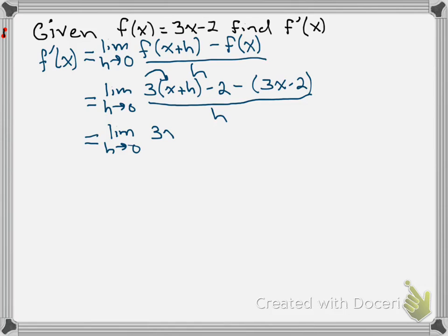3 times x is 3x, distribute the 3 to the h, and we get a plus 3h. We have a minus 2, from the minus 2 right here, and now we distribute this negative.